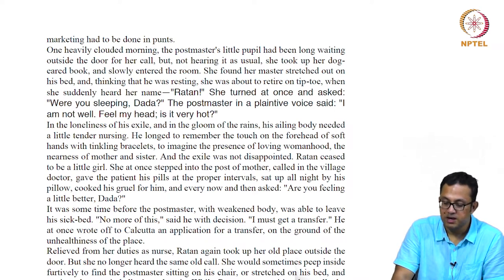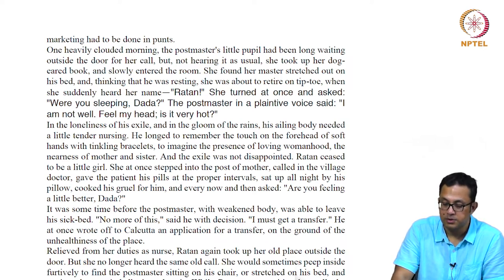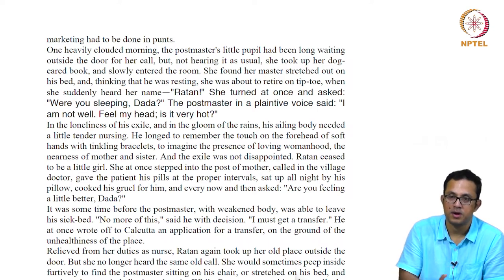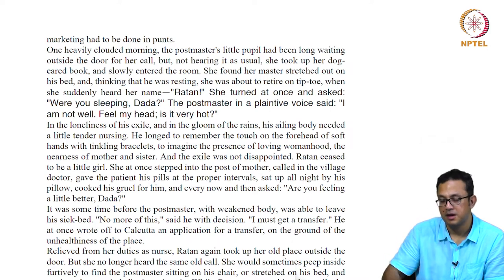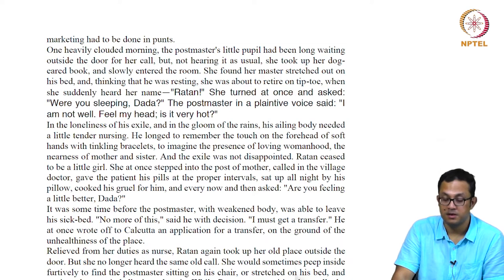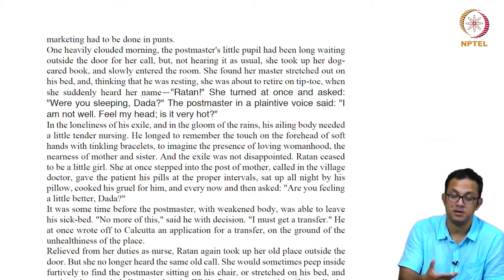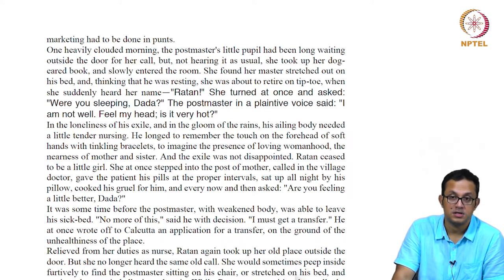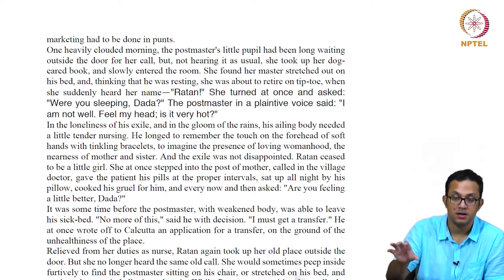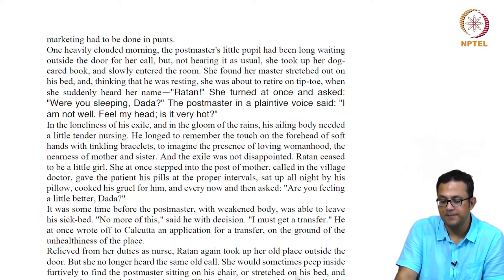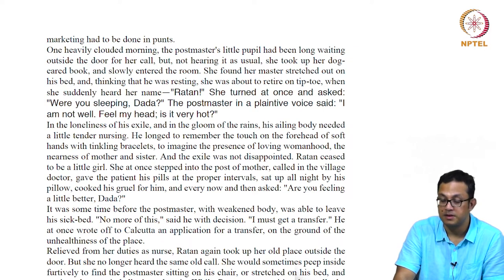It was some time before the postmaster, with his weakened body, was able to leave the sick bed. 'No more of this,' he said with decision. 'I must get a transfer.' He at once wrote to Calcutta an application for transfer on the ground of the unhealthiness of the place. This is the point of the story where he begins thinking of moving out — and obviously Ratan does not know it. There is a quality of dramatic irony: we know the postmaster wants to leave, but Ratan does not know it yet.